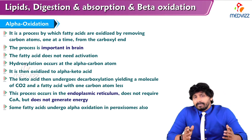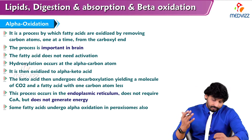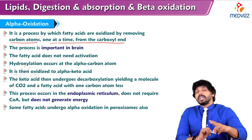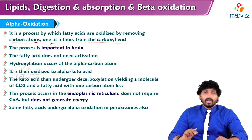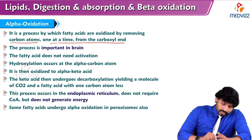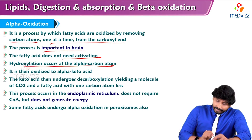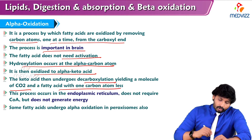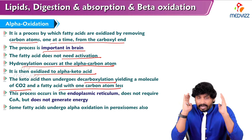Now alpha oxidation. So far we have seen beta oxidation; what is alpha oxidation? Alpha oxidation is also happening. It is a process by which fatty acids are oxidized by removing carbon atoms one at a time — not two as in beta oxidation. In beta oxidation, two carbons are removed, but in alpha oxidation only one carbon is removed at a time, also from the carboxyl end. This process is important in the brain. The fatty acid doesn't need activation. Hydroxylation occurs at the alpha carbon atom and then it oxidizes to the alpha-keto acid. The keto acid then undergoes decarboxylation, yielding a molecule of CO2 and a fatty acid with one less carbon atom. This process occurs in the endoplasmic reticulum, doesn't require CoA, and does not generate any energy.